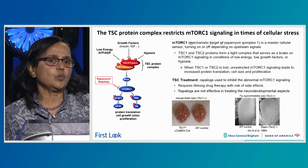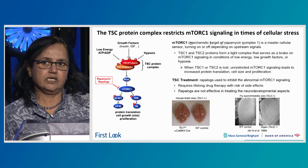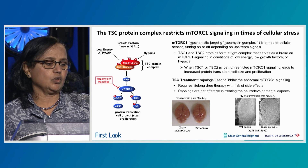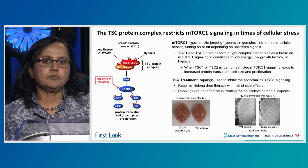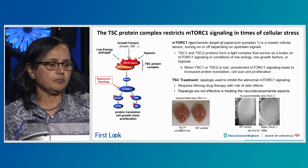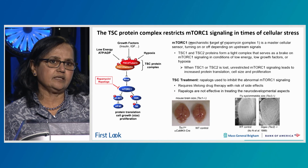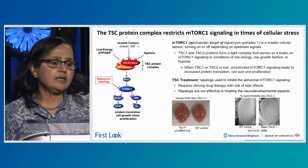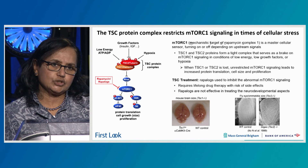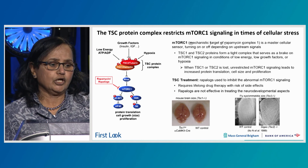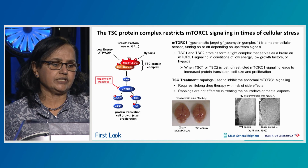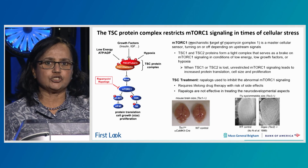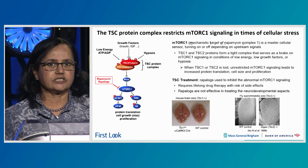Cell size is one of the hallmarks of this disease with activation of the mTORC1 pathway anywhere you look. For instance, you can see the mouse brain at the bottom — when TSC1 is eliminated, you can see the enlarged size of the brain. Similarly, when you remove TSC2 from Drosophila eye, you see an increase in the ommatidia size. So cell size, in addition to proliferation, is a hallmark.